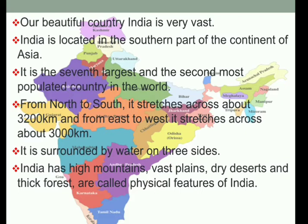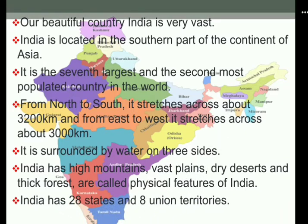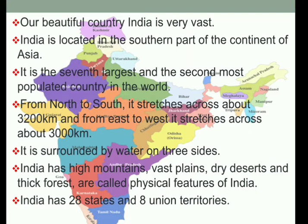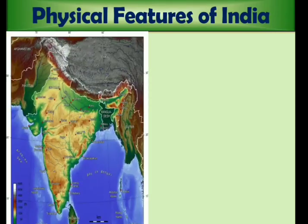India has high mountains, vast plains, dry deserts, and thick forests, and these are called the physical features of India. India has 28 states and 8 union territories. In this module we will learn about the physical features of India.